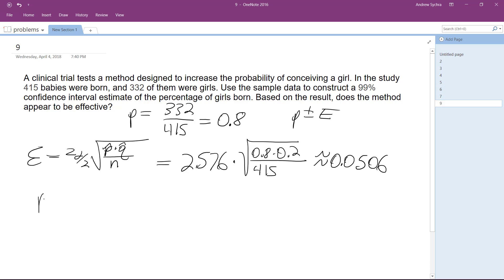Now all I do is P plus or minus E. So P, which is 0.8, plus or minus 0.0506. I'll round this to 3 decimal places. This ends up being P is greater than 0.749.